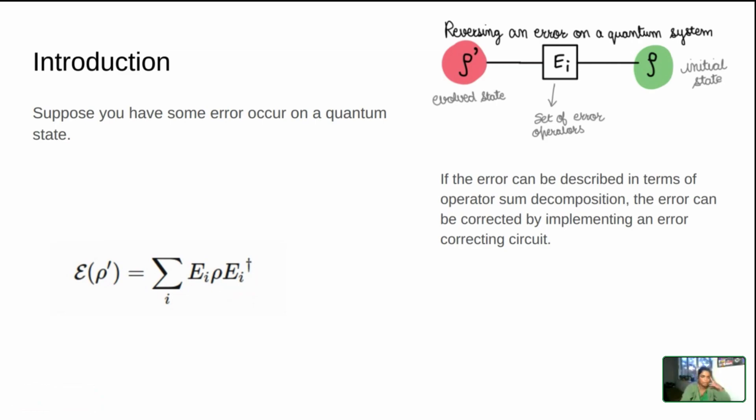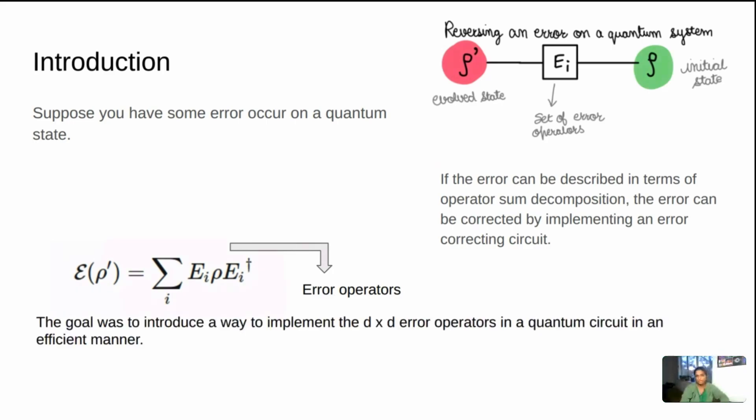In that case, you know that the error can be corrected, but in order to correct the errors, you have to be able to implement it in the circuit. I proposed this project for Q-tip because I did look around and there are a lot of functionalities where they do decompose the error operators, but usually they don't give you the option in terms of optimizing for some specific gate or some specific architecture of the device itself.